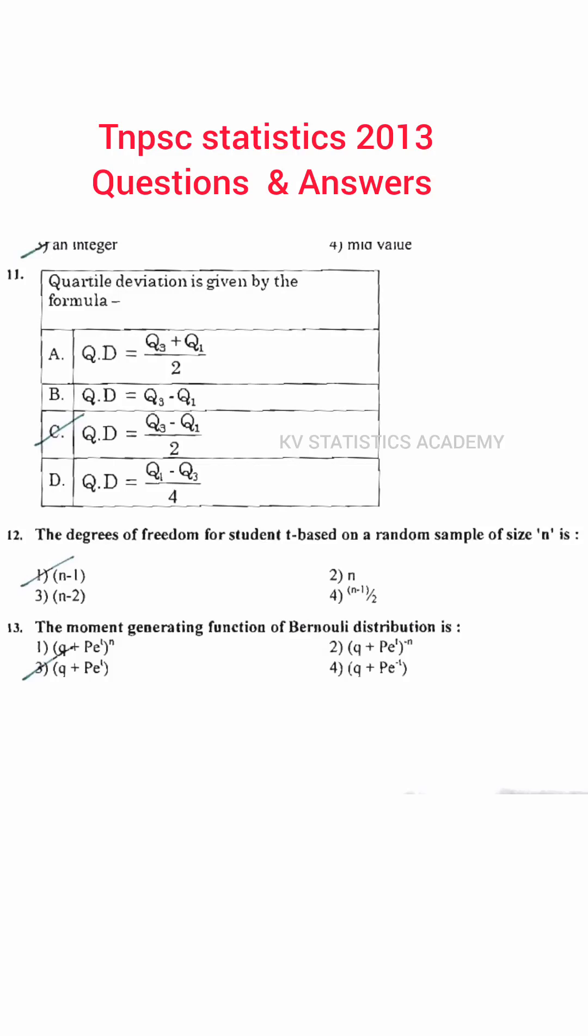TNPSC statistics 2013 previous year question. Quartile deviation is given by the formula: Quartile deviation equals Q3 minus Q1 divided by 2.